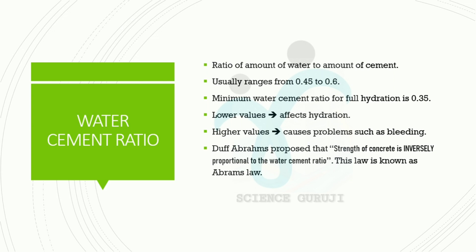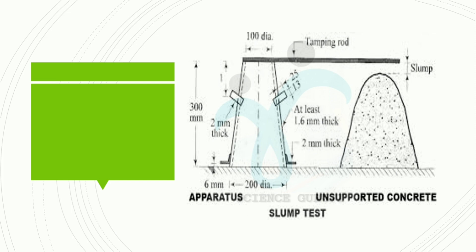Strength of concrete is inversely proportional to water-cement ratio. Now we are going to the slump test. In the slump test, slump is the height through which the concrete has subsided — it is the clear vertical distance between the top of the mould and the height of the subsided concrete. Slump cone dimensions: top diameter is 100 mm, bottom diameter is 200 mm, and the height is 300 mm.